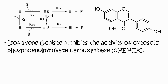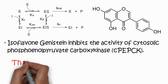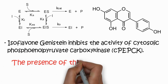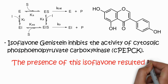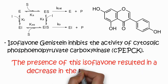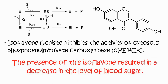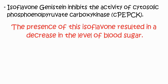Genistein inhibits the activity of cytosolic phosphoenolpyruvate carboxykinase (PEPCK) complex present in the cytosol. This plant isoflavone is an important example used for medicinal purposes. The presence of isoflavone results in a decrease in blood sugar levels because it inhibits the glycolytic reaction.